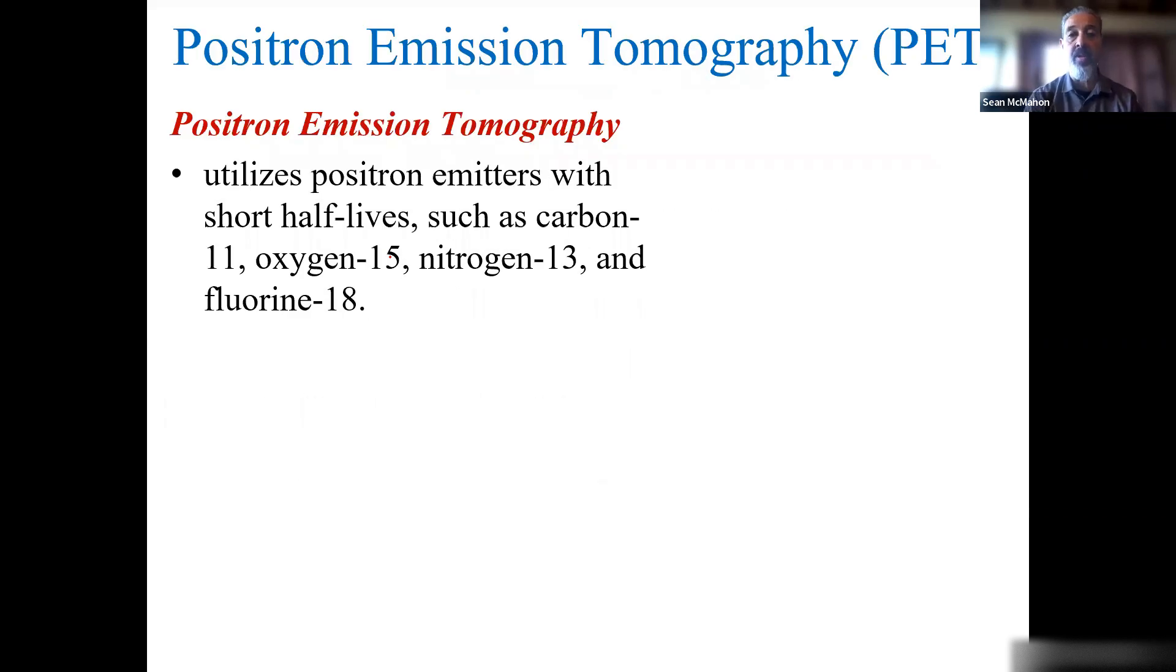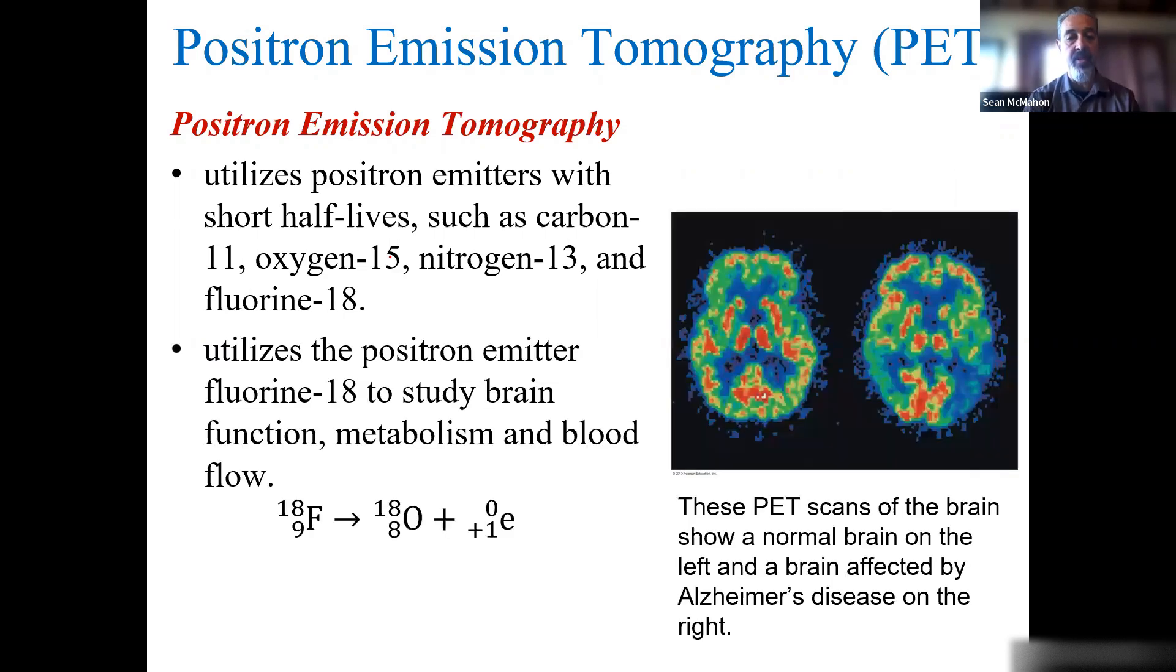With positron emission tomography, this utilizes positron emitters with short half-lives. Some examples are carbon-11, oxygen-15, nitrogen-13, fluorine-18. It utilizes the positron emitters, fluorine-18 to study brain function and metabolism and blood flow. Here are a couple of examples of PET scans for an Alzheimer patient.